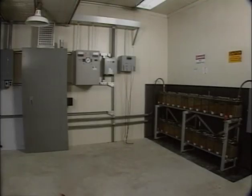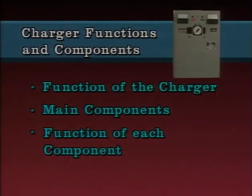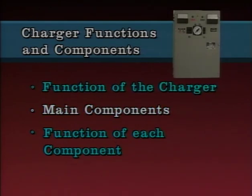A DC control system is a critical emergency power source for substation devices that protect and control transmission and distribution systems. The battery charger is a key part of the DC control system. This first part of the program will look at the functions and components of a typical substation battery charger. The key points covered include the functions of a substation battery charger, the main components of a charger, and the function of each of these components.